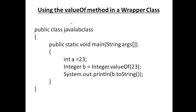The 'valueOf' method works as follows: 'Integer.valueOf(23)' takes the value 23 and assigns it to an Integer object 'b'. You pass the primitive data type and it assigns that value to the object. So there are wrapper classes for every primitive type — float, double, short, long, boolean, character — and you can explore their methods as well.